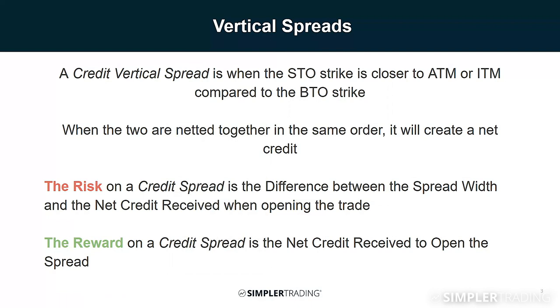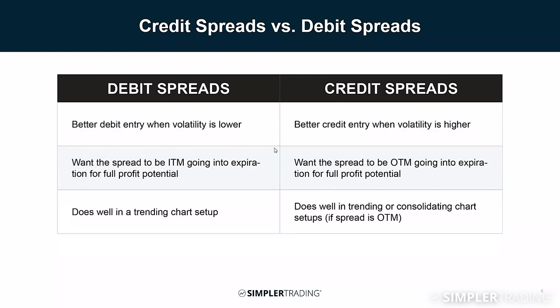Credit vertical spreads are also sometimes known as short vertical spreads or short credit spreads - all those names mean the same thing. Debit spreads work best when volatility is lower, because typically the option strikes won't be as expensive. Getting at-the-money or even slightly out-of-the-money, you'll get a better debit, and in turn, with that lower risk, you also end up with a better profit potential.